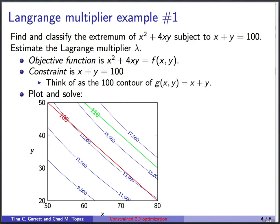So this is a kind of abstract example. Let's try to find the extremum of x² + 4xy subject to x + y = 100. We'd also like to estimate the Lagrange multiplier λ.